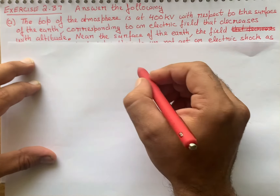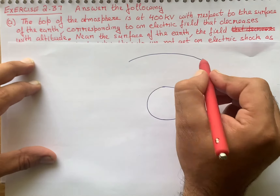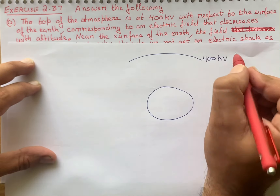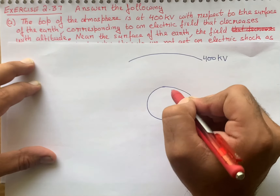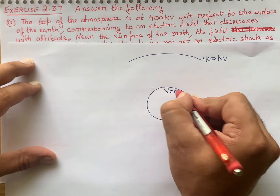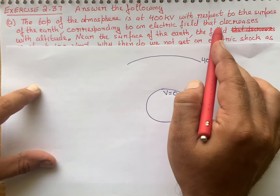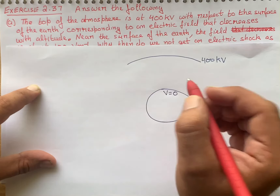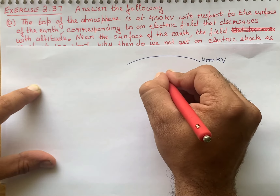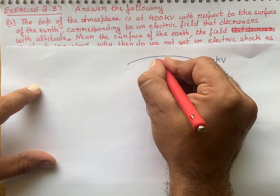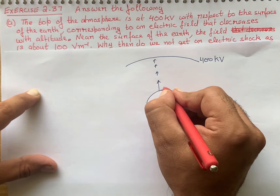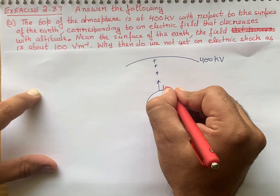Class 12, Exercise 2.37 — answer the following. Option A: The top of the atmosphere is at 400 kilovolt with respect to the surface of the earth, corresponding to an electrical field that decreases with altitude. Near the surface of the earth, the field is about 100 volt per meter. Why then do we not get an electrical shock as we step out of our house into the open? Assume the house to be a steel cage so there is no field inside.